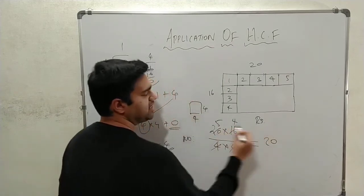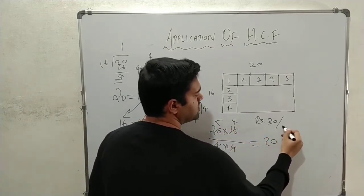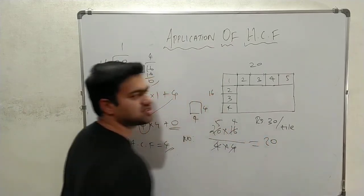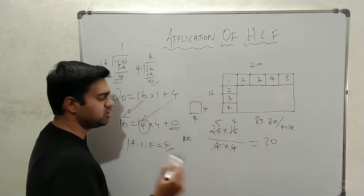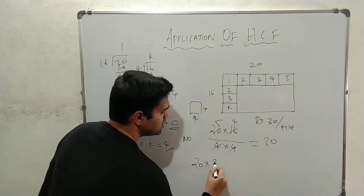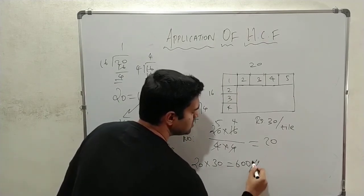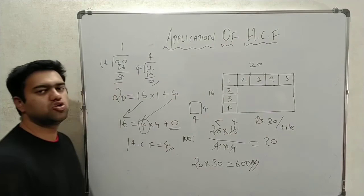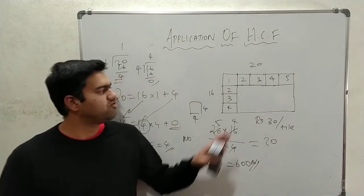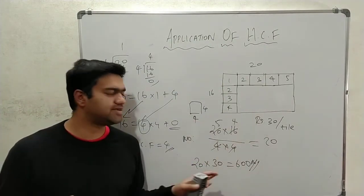In the 4 by 4 tiles, one tile cost is 30 rupees per tile cost. We use 20 tiles. So, 20 tiles is 30 rupees. Now, we purchase total 600 rupees. So, total cost of purchase for laying this room is 600 rupees.